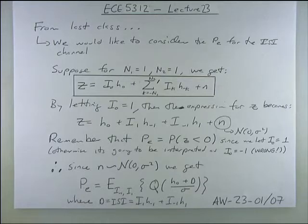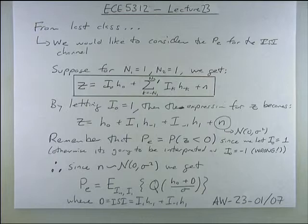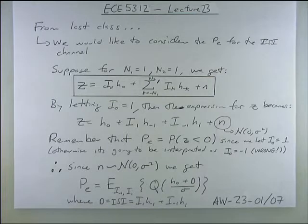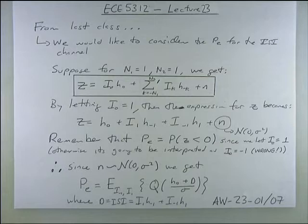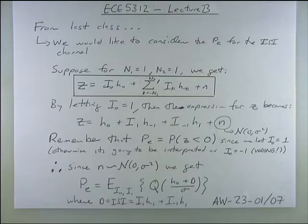First, suppose i_0 equals one. The Z expression then has the precursor term, the first post-cursor term, plus noise — we're ignoring other ISI terms for now because they decay. We take the most significant precursor and post-cursor elements, those immediately adjacent to the desired sampling instant. This is going to be graphical.